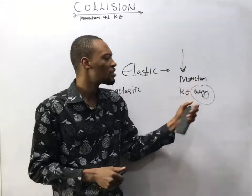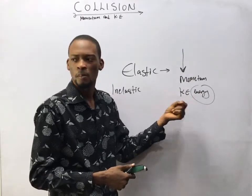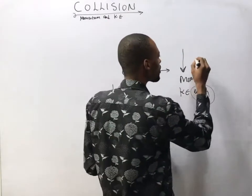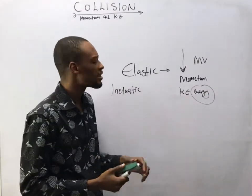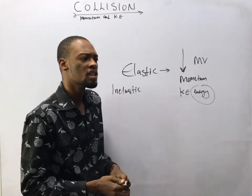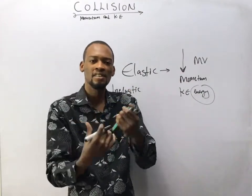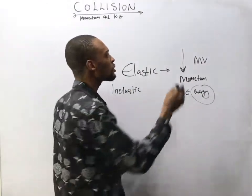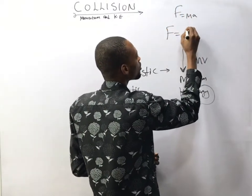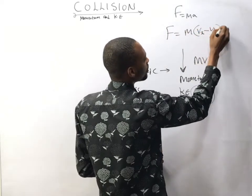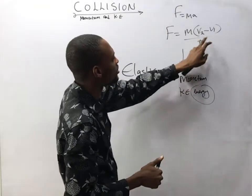In elastic collision, momentum and kinetic energy are conserved. This means momentum before collision equals momentum after collision, with no energy loss. Momentum is simply the product of a body's mass and velocity. Newton's second law of motion states that the rate of change of momentum of a body is proportional to the force applied, and from that law we derive that force equals mass times acceleration, which means force equals m(v2 − v1) over time.